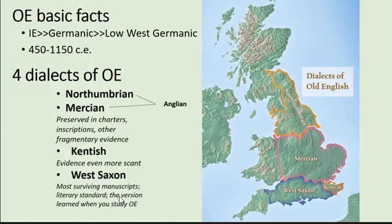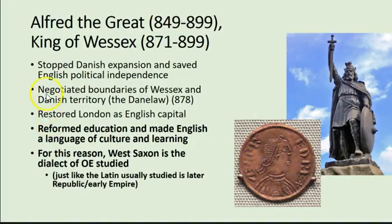Moving on to our discussion: we already went over that there are four dialects of Old English — Northumbrian, Mercian, Kentish, and West Saxon. We're going to be looking at West Saxon because that tends to be the standard that survives. This has in part to do with King Alfred the Great of Wessex, who stopped Danish expansion, saved English political independence, restored London as the English capital.